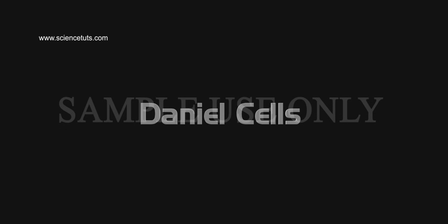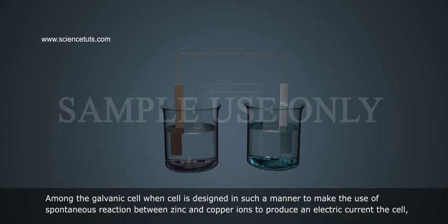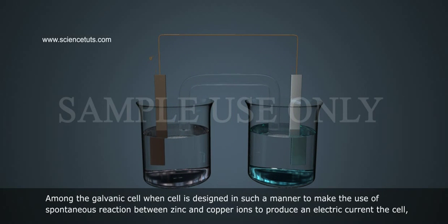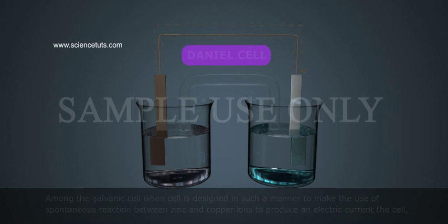Daniel's cell. Among the galvanic cell, when a cell is designed in such a manner to make use of the spontaneous reaction between zinc and copper ions to produce an electric current, the cell is called Daniel's cell.